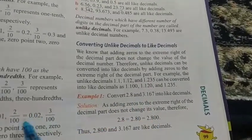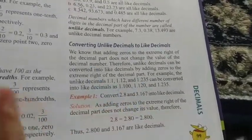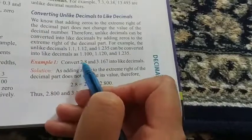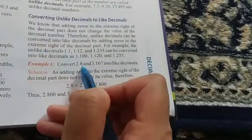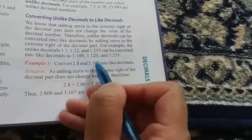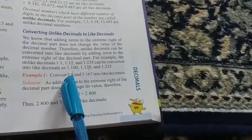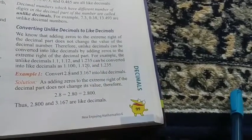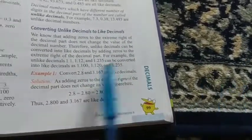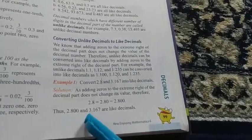Now the thing is how to convert unlike decimals to like decimals. Yehaan pae 2.8 and 3.165. See, yehaan pae 8 hai, yehaan pae 1 digit hai, yehaan pae 3 digits hai. Ab easy kya ho jayega, I can add zeros. Zero add ho sakte hai because zero ke baad koi value meh farak nahi padheka. So it will be 2.800 and 3.167, so yeh like decimals humare ban jayenge. Okay, so I think that's all for today.